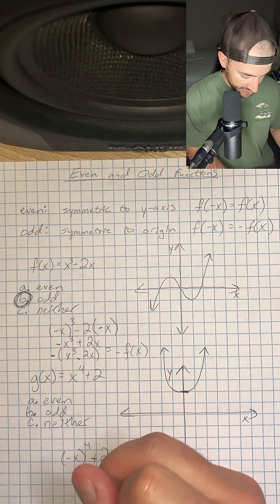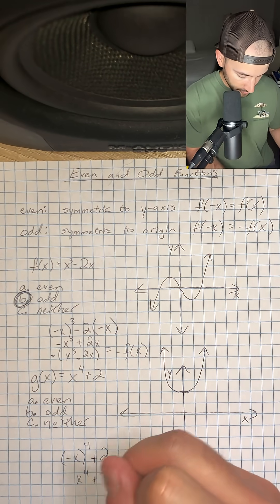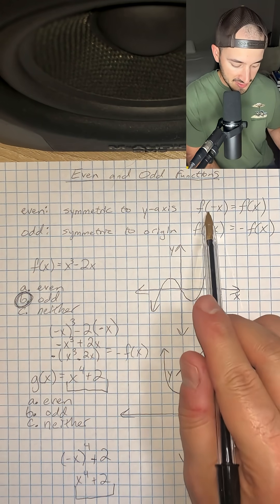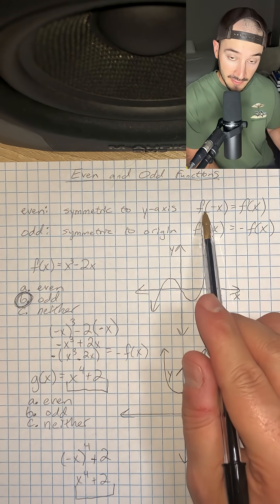So this is positive x to the fourth plus 2. Our function did not change at all, just like we said should be the case with an even function.